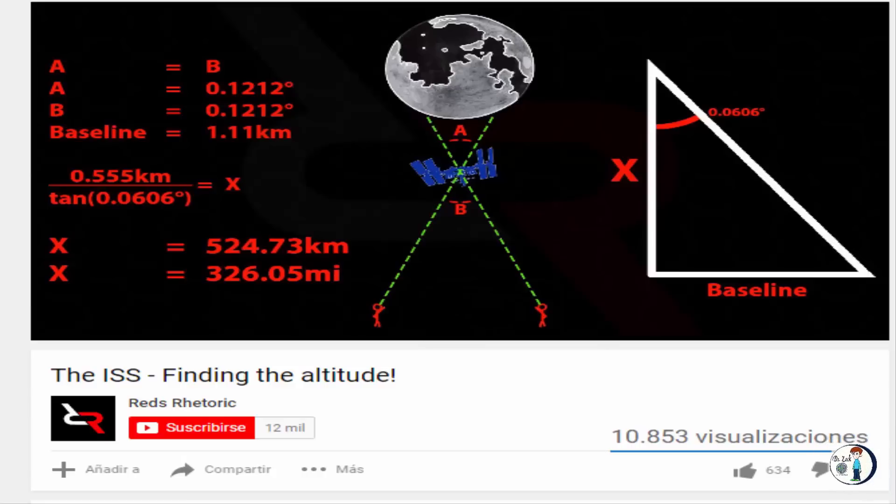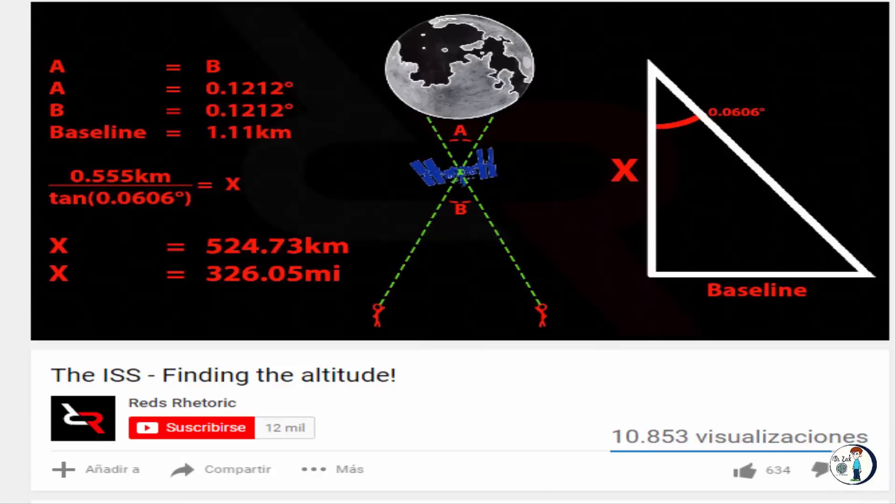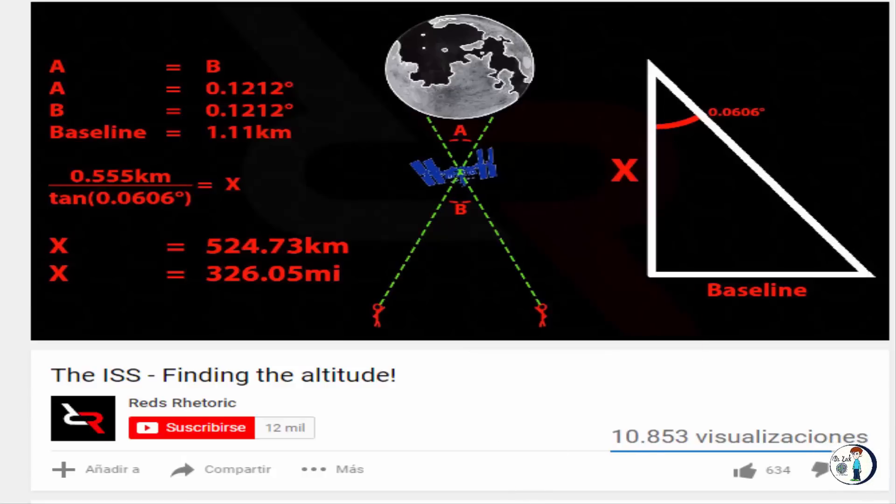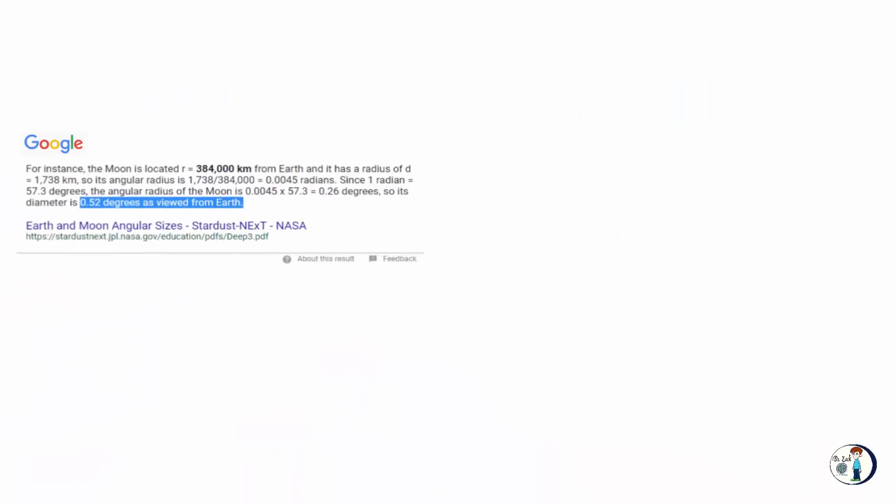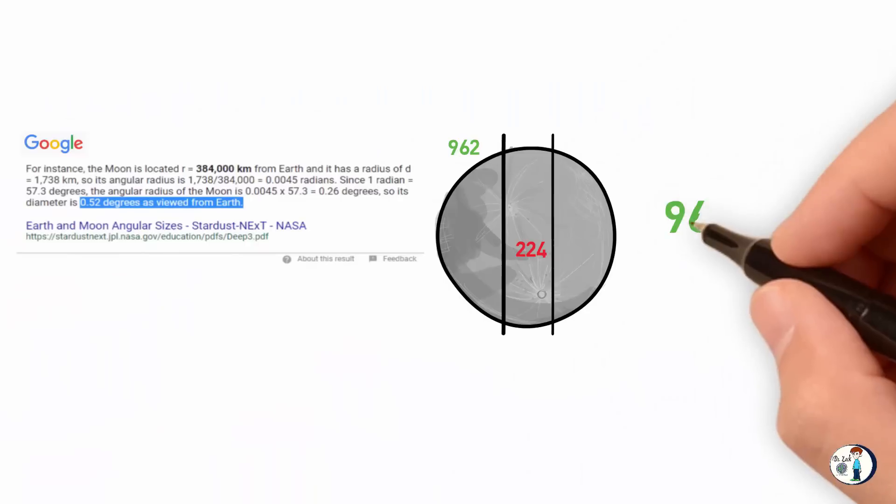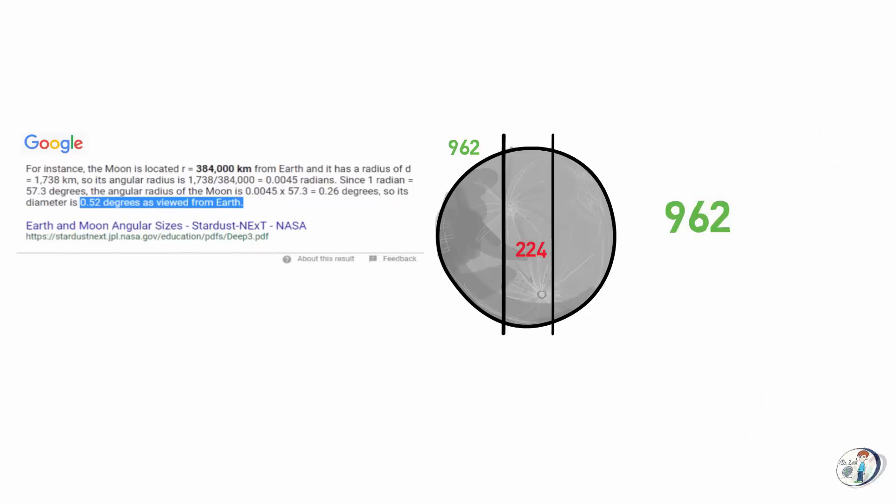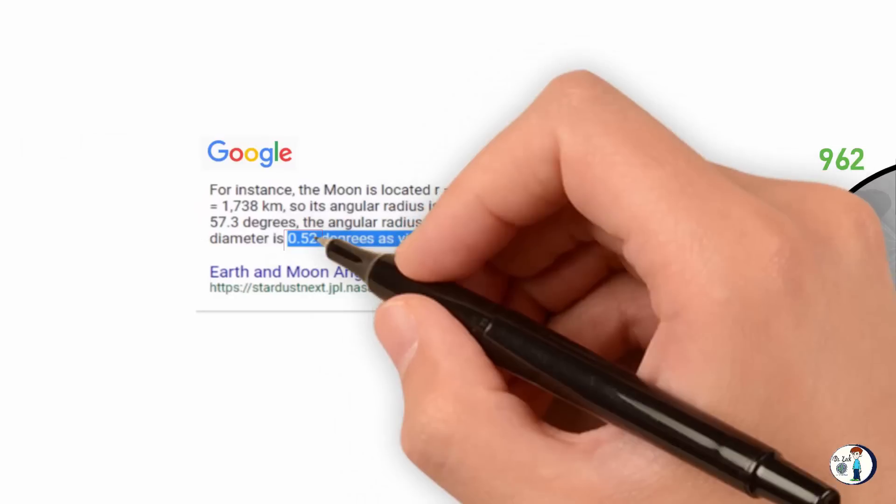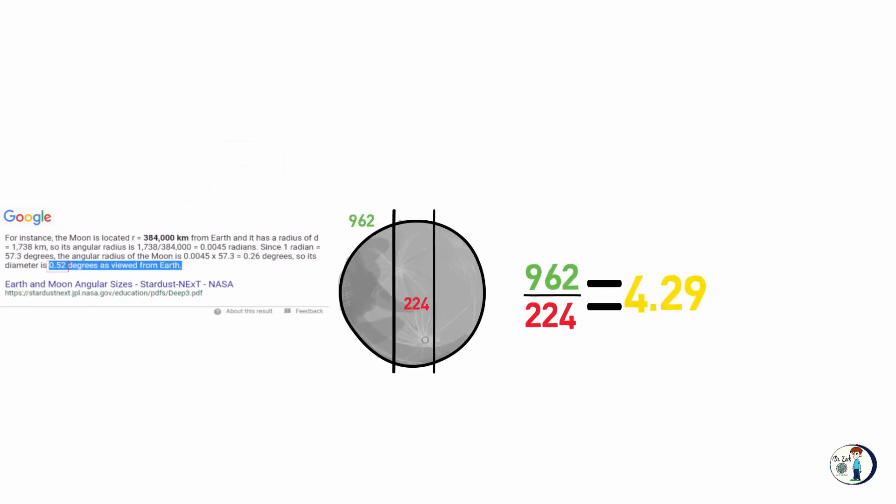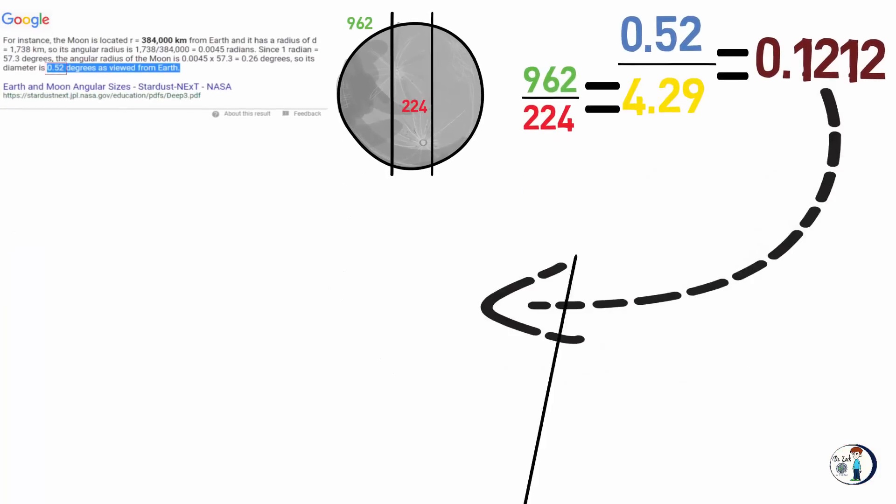All right, let's analyze it. Here is his math. The pixels of the moon, 962, divided by the pixels between the two tracks, 224, equals 4.29. Now he takes the angular radius of the moon, 0.52, and divides it by 4.29, and he gets 0.1212. So that is A and B angle.